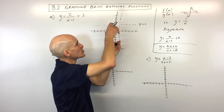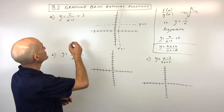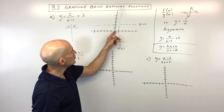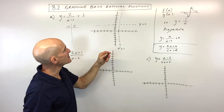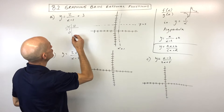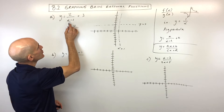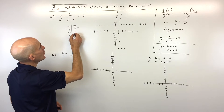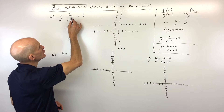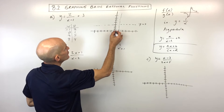A simple way to graph this is to make an xy table, picking values on either side of the vertical asymptote — like negative 1, 0, 2, and 3. Substituting: x = -1 gives y = 2, x = 0 gives y = 1, x = 2 gives y = 5, and x = 3 gives y = 4.